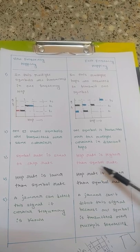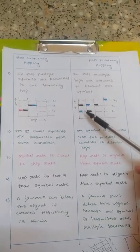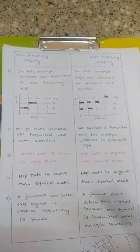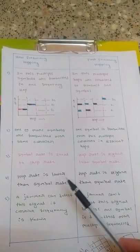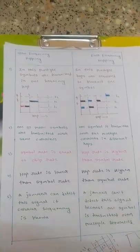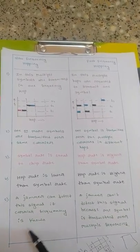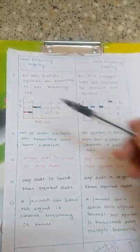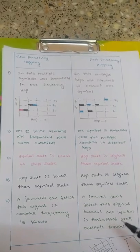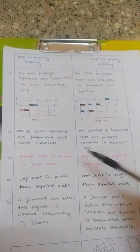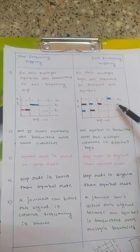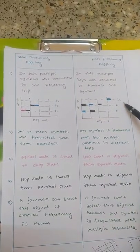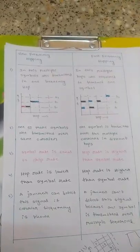In fast frequency hopping, the hop rate is higher than the symbol rate — 'hop' means the frequency changing rate. The frequency changing rate is higher than the symbol rate because one data is transmitted on different frequencies. In slow frequency hopping, the hop rate is lower than the symbol rate. A jammer can detect the slow hopping signal if the carrier frequency is known, because one data is completely transmitted in one frequency. In fast frequency hopping, a jammer can't detect the signal because one symbol is transmitted over multiple frequencies — if someone knows F2, they can't know F1 or F3, so they can't detect the signal.